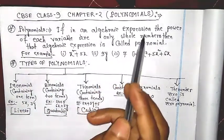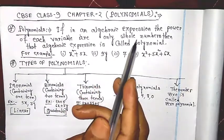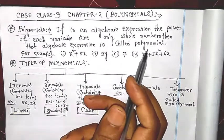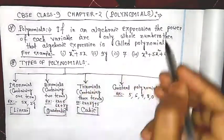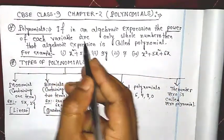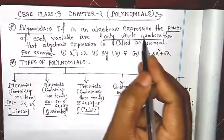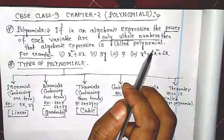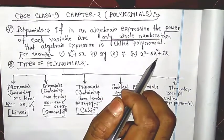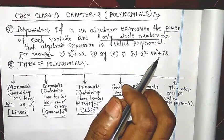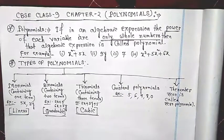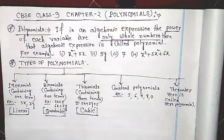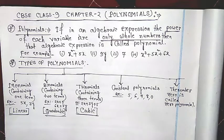The definition: if in an algebraic expression the power of each variable are only whole numbers, then that algebraic expression is called a polynomial. These two words you have to remember — the power is only whole numbers. Algebraic expression contains constant, variable and operator. An algebraic expression is called polynomial if the power is only whole numbers.